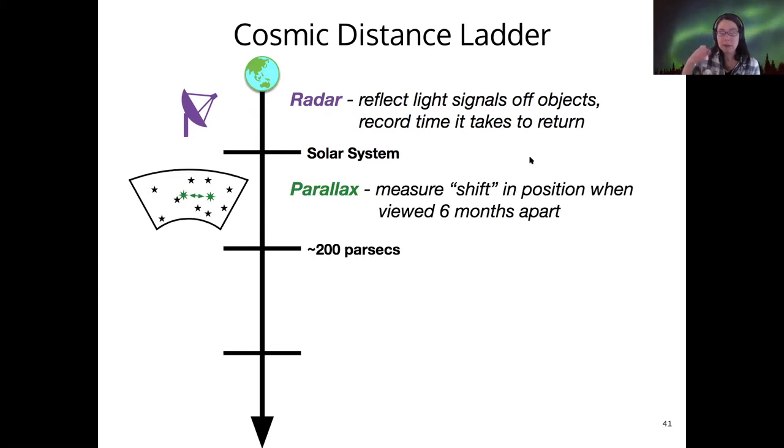If we need to measure to interstellar distances, then we can use the method of parallax. That's what we talked about last week. Last week? Monday? Can't remember. And so this is measuring the shift in the position of stars when you're viewing from six months apart in Earth's orbit around the sun.